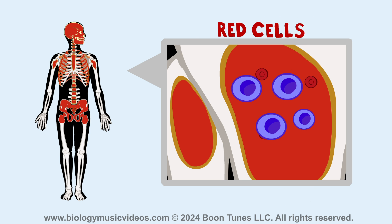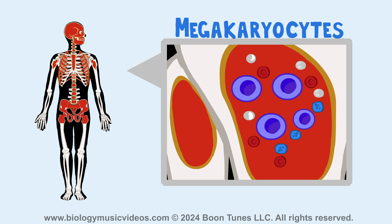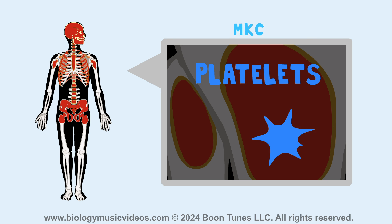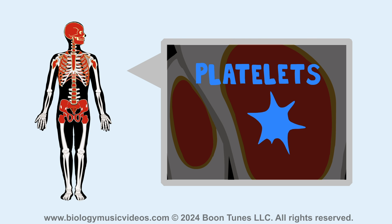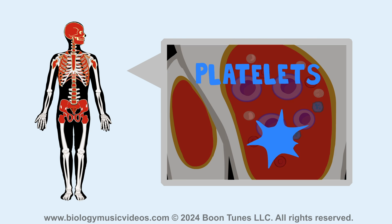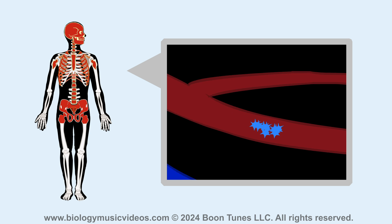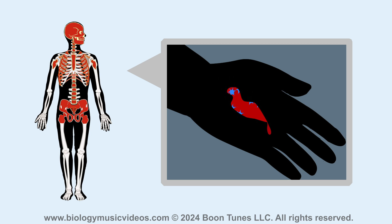Multipotent stem cells give rise to red cells, white cells, and additionally megakaryocytes, or MKCs. Platelets are made in the marrow as well, but they're not classified as true cells — they're fragments of megakaryocytes which help the blood clot at bleeding sites.